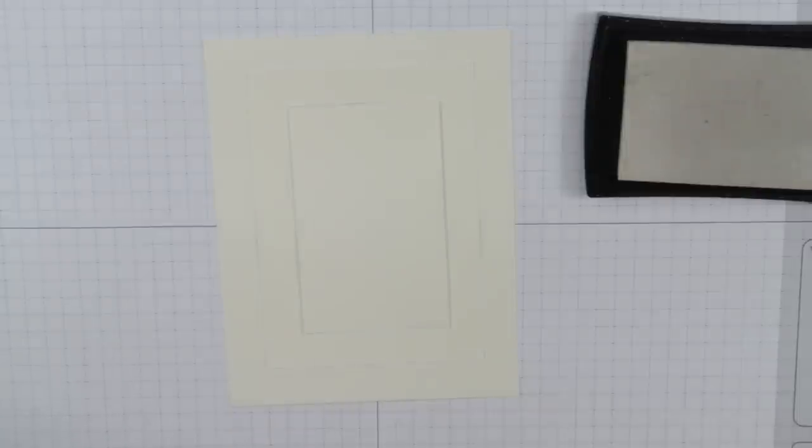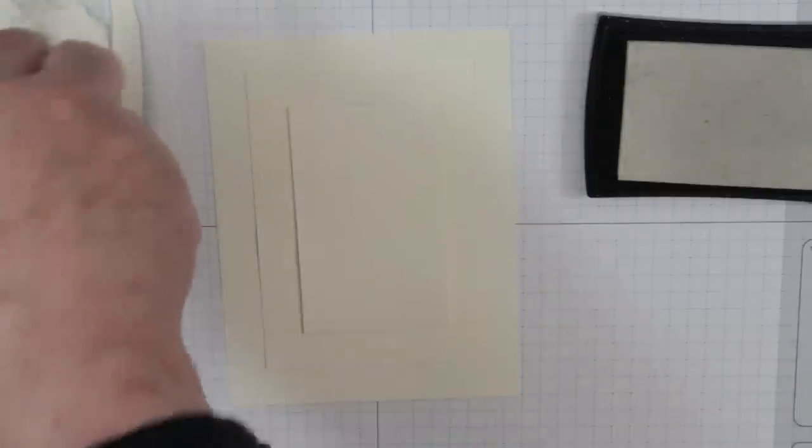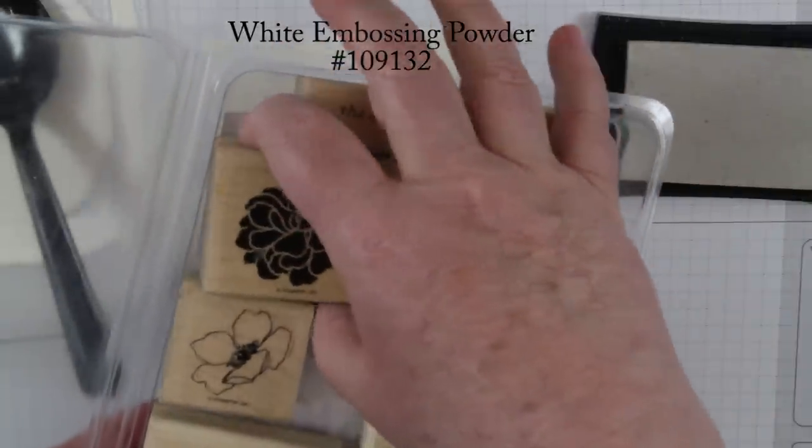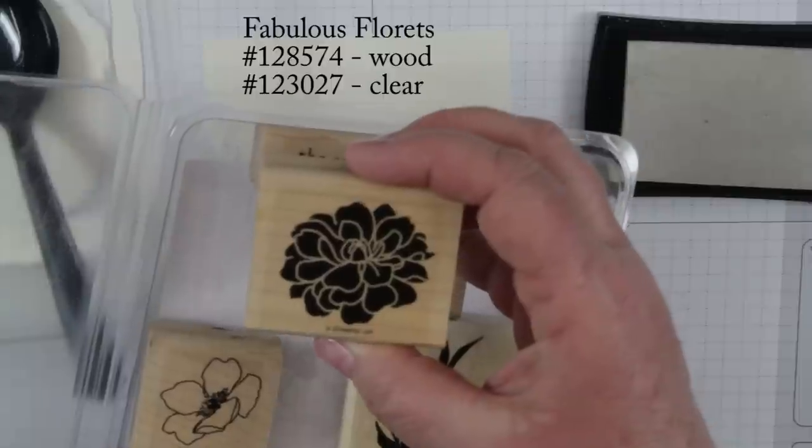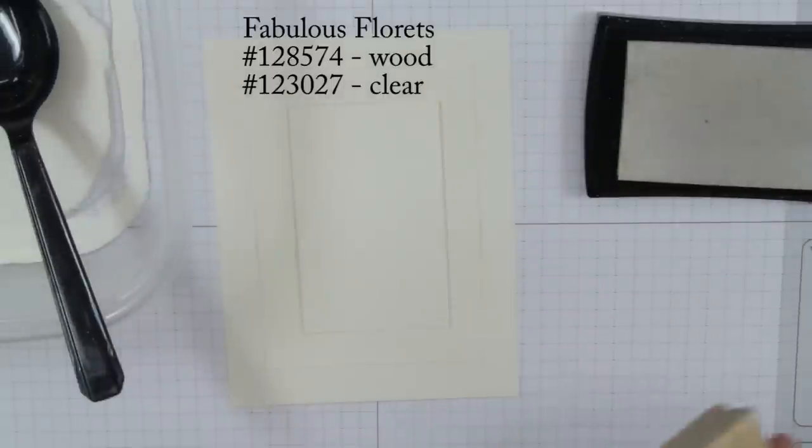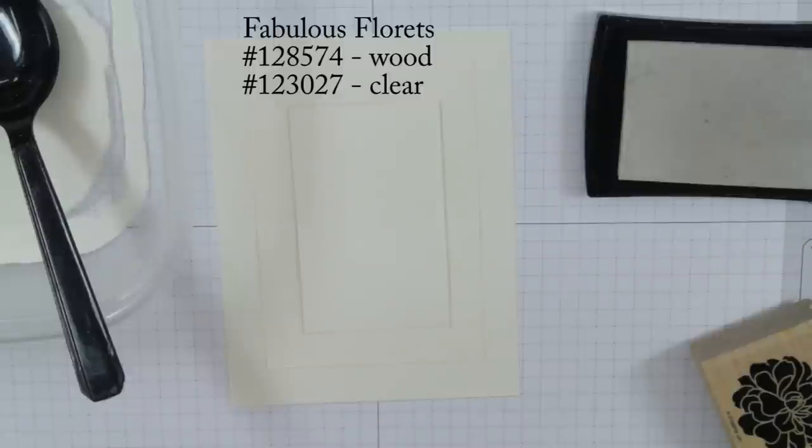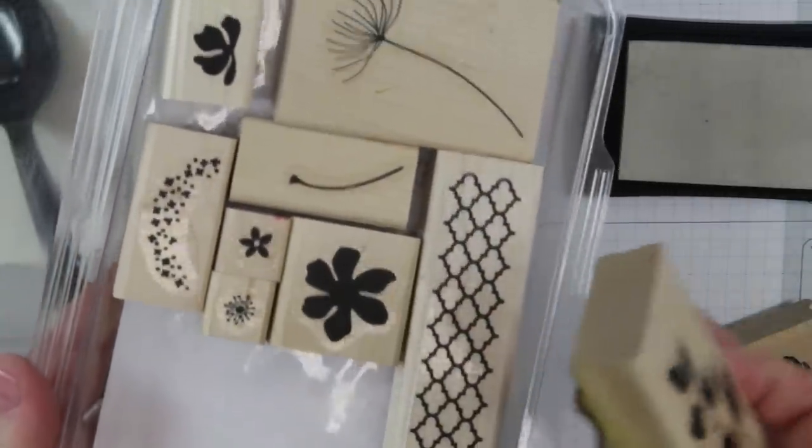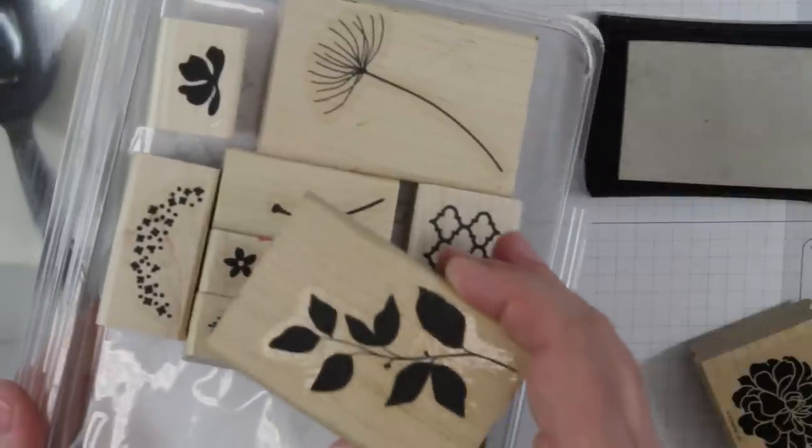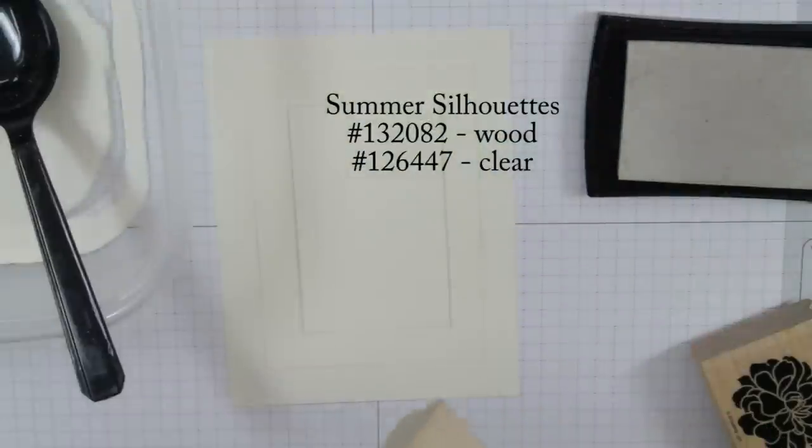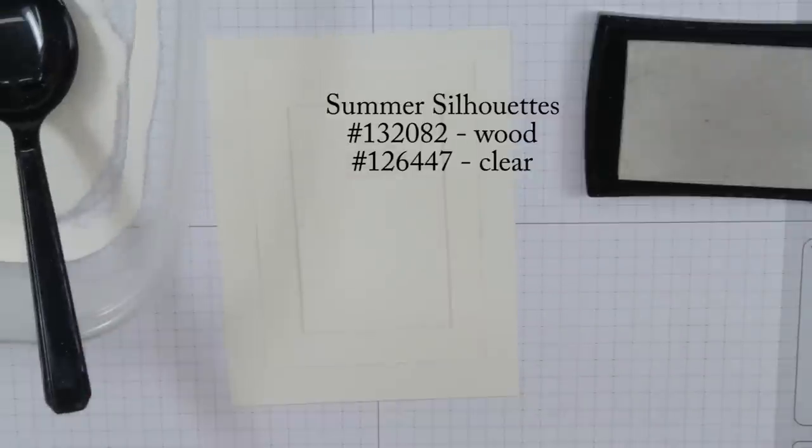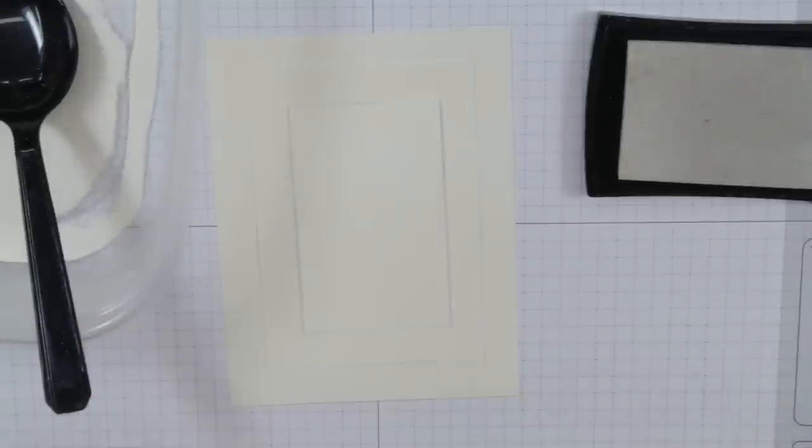I've got my white embossing powder and I'm going to be using the Fabulous Floret stamp set. I'm using this solid image from that set. I'm also using the leaves from another very popular stamp set, Summer Silhouette. I'm using a sentiment from a new catalog item. The catalog is not live yet so I can't show you the stamp, but you can see the finished image once I get it stamped.